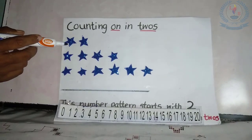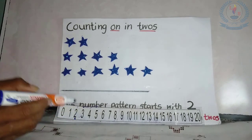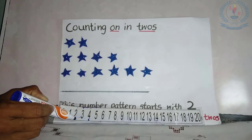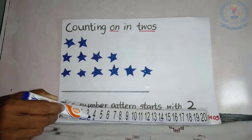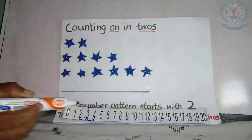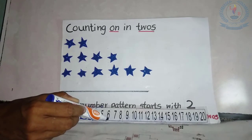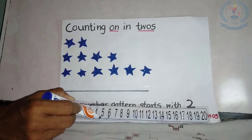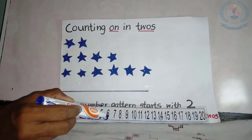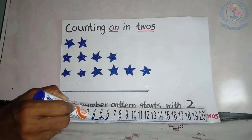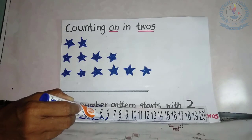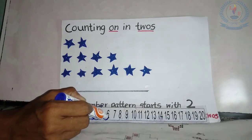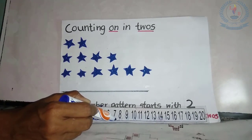How many stars in the first row? Yes, 2. The second row, 4. From 2 to 4, we can draw the arrows: 1, 2. In the third row there are 6. From 4 to 6, we can draw the arrows: 1, 2. We count on in 2's.